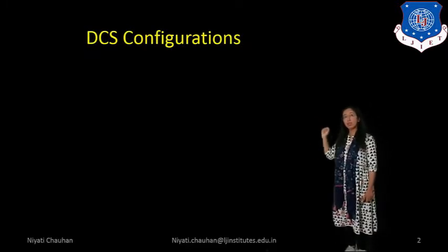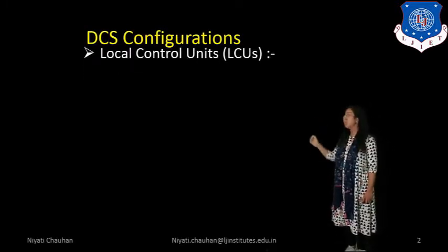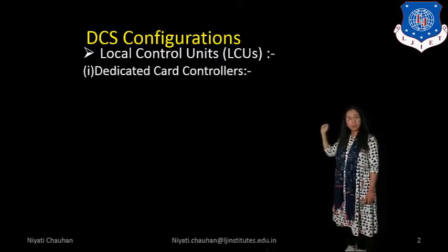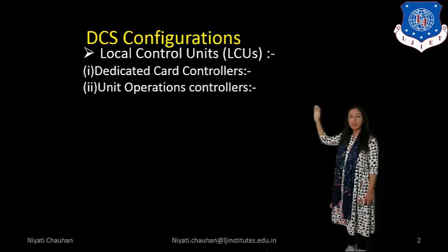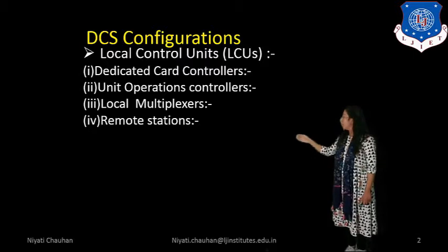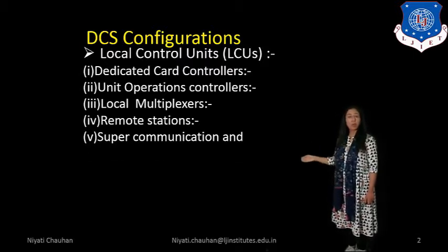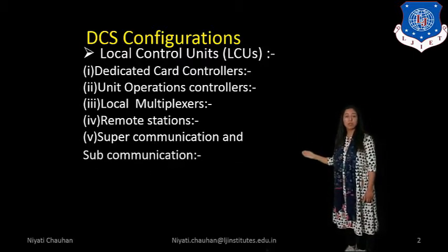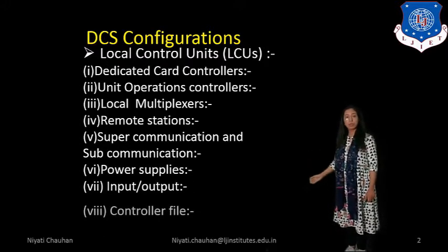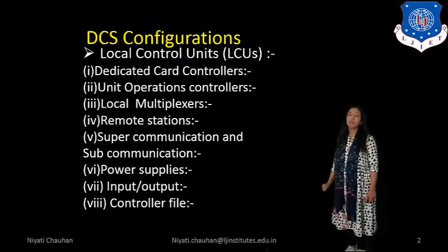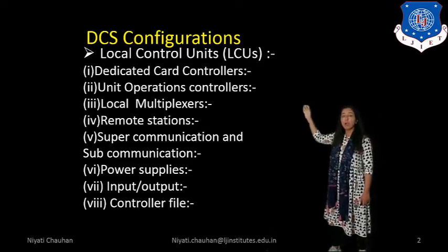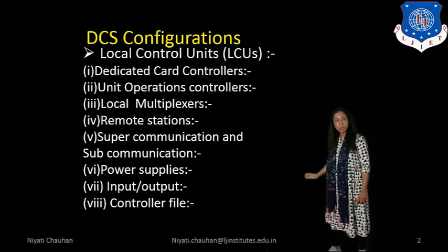We know that in DCS configuration, we consider Local Control Unit. First, Dedicated Card Controller, then Unit Operations Controller, Local Multiplexers, Remote Station, Super Communication and Sub Communication, Power Supplies, Input Output, and Controller 5. In the last lecture, we discussed all of these Local Control Units.